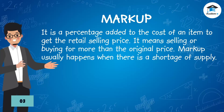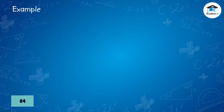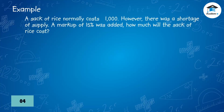Markup usually happens when there is a shortage of supply. Example: a sack of rice normally costs 1,000 pesos. However, there was a shortage of supply and a markup of 15% was added. How much will the sack of rice cost?